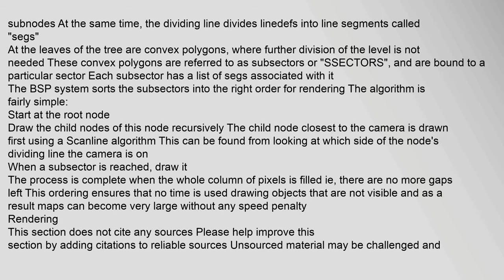The BSP system sorts the subsectors into the right order for rendering. The algorithm is fairly simple: start at the root node and draw the child nodes recursively. The child node closest to the camera is drawn first using a scanline algorithm, determined by which side of the node's dividing line the camera is on. When a subsector is reached, draw it. The process is complete when the whole column of pixels is filled with no more gaps left.